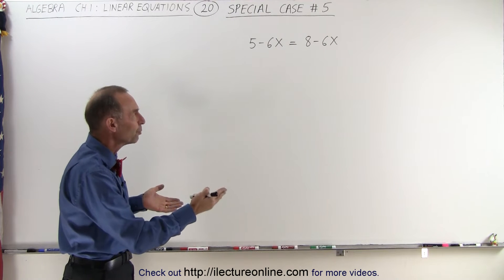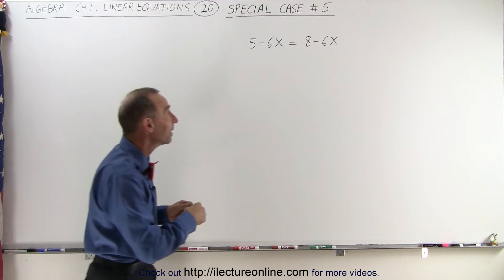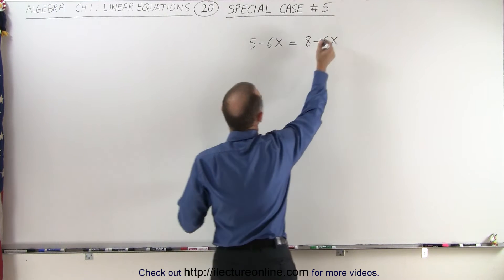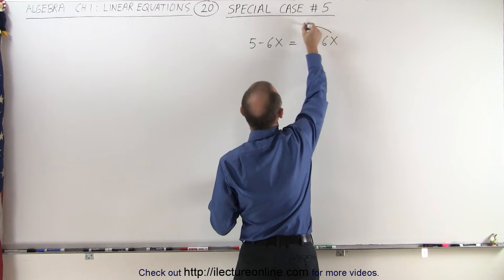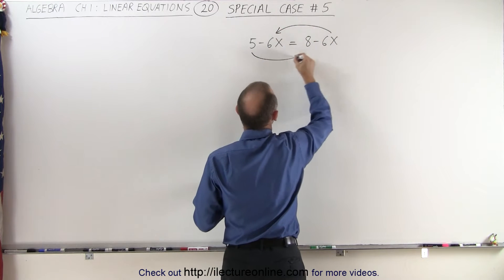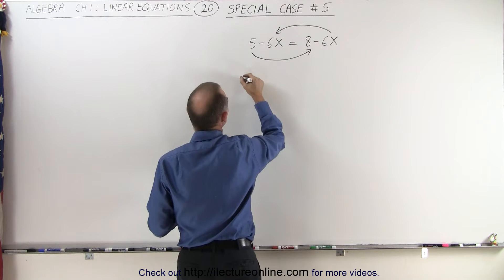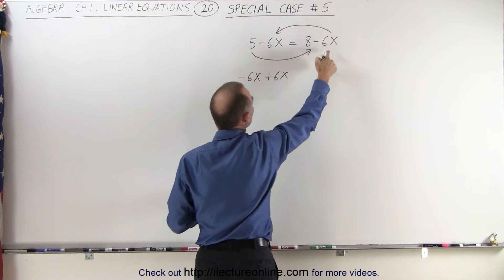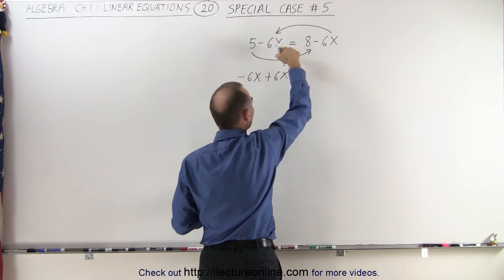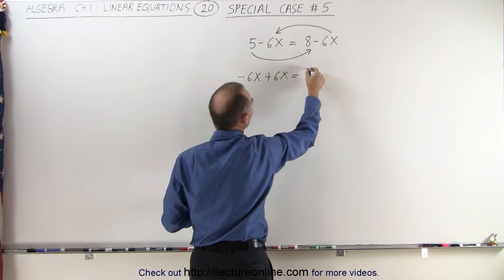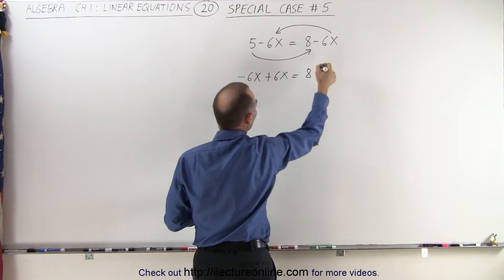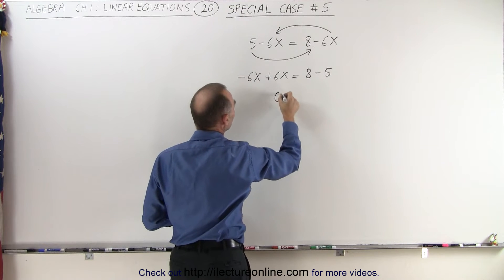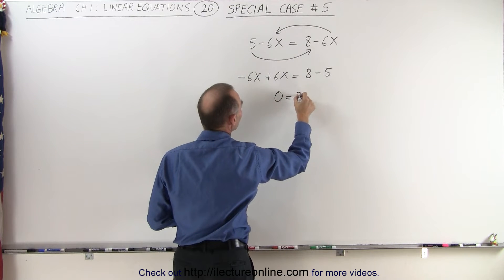What we're going to do is move all the terms with x to one side and all the numbers to the other side. This minus 6x goes to this direction, and the 5 moves over here. We end up with minus 6x plus 6x — because when we move the minus 6x to the other side it becomes a plus 6x — equals 8. Move the 5 to the other side, it becomes a minus 5. Adding these together we end up with 0 is equal to 8 minus 5, which is 3.